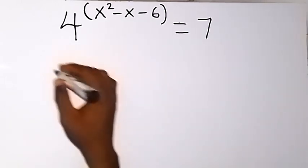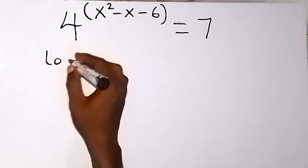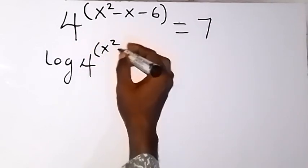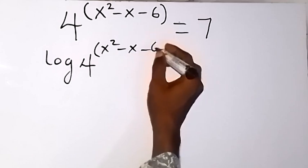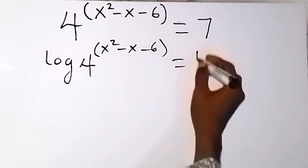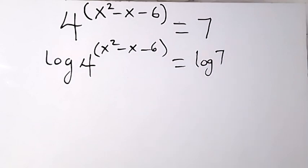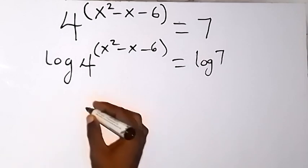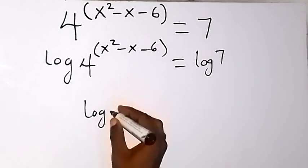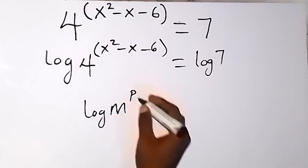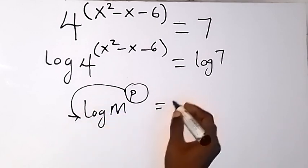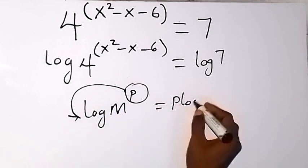We can take the natural log on both sides and say we have log of 4 raised to the power x squared minus x minus 6, then equals to log 7. From here, when we apply the law of logs — the power law — that is when we have log m raised to power p, this power p will be moved to the front and we have p log m.